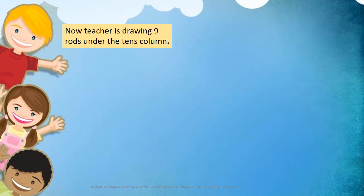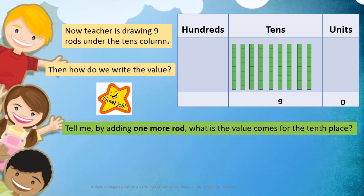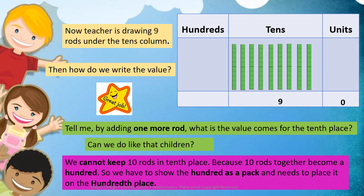Now, TJ is drawing nine rods under the tens column. How do we write the value? We should write 9 under the tens column and 0 under the units column. Now, by adding one more rod, what value comes in the tens place? We cannot keep 10 rods in the tens place because 10 rods together become 100. So we have to show the 100 as a pack and place it in the 100th place.